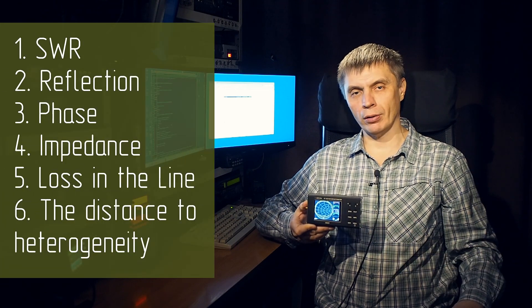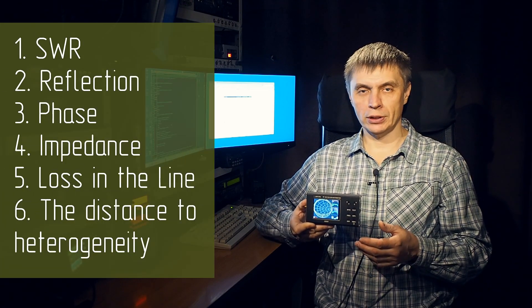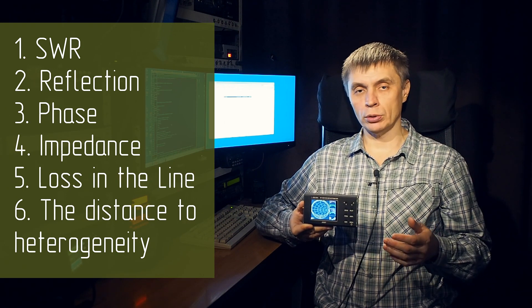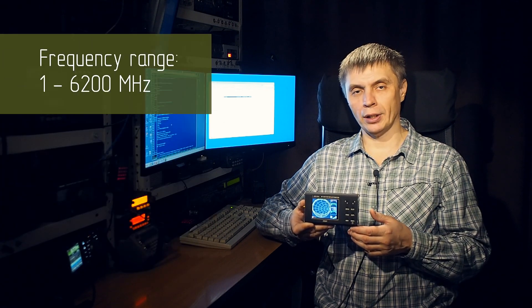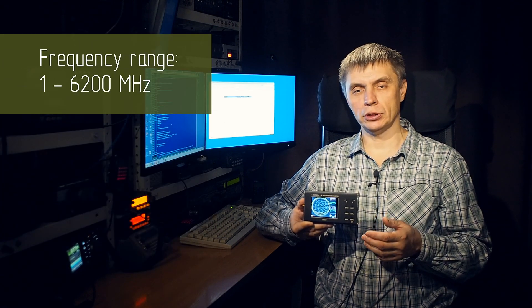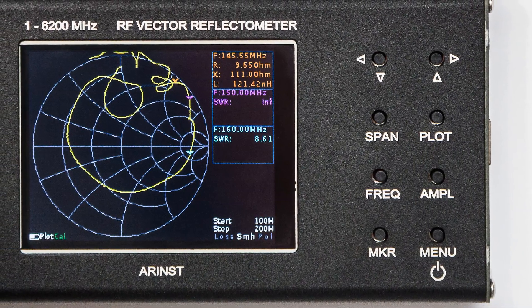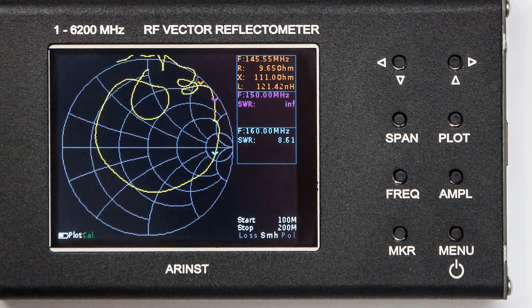Using this analyzer you can measure the following parameters: SWR, reflection coefficient, the phase of the reflected signal, impedance, loss in the line, and the distance in the cable to the point of heterogeneity. The frequency range is from 1 to 6200 MHz. The number of scanning points is up to 1000. The scanning speed is 1000 points per second. Frequency resolution up to 100 MHz is 100 Hz; resolution at frequencies above 100 MHz is 10 kHz. The device has 8 buttons and a color display with a touch screen function.